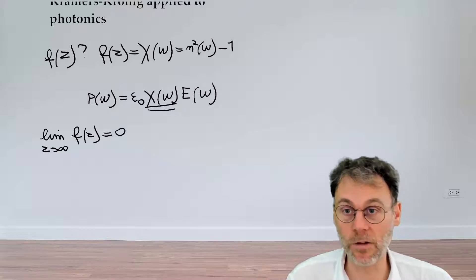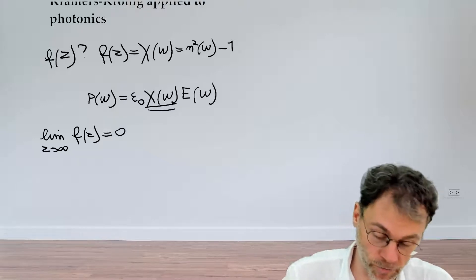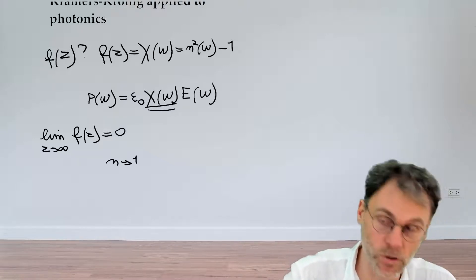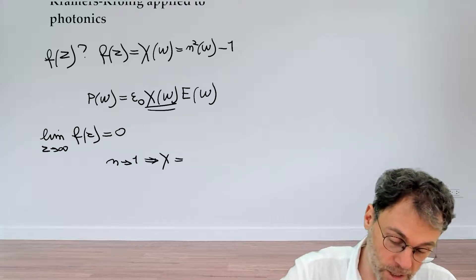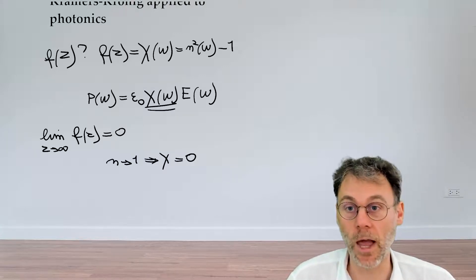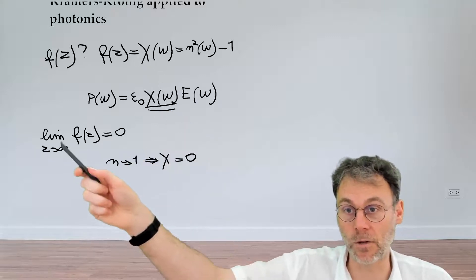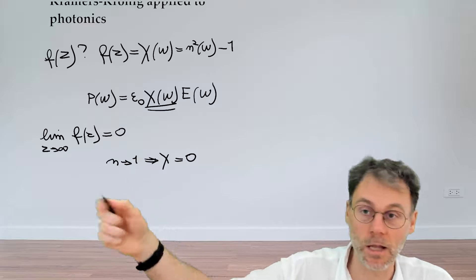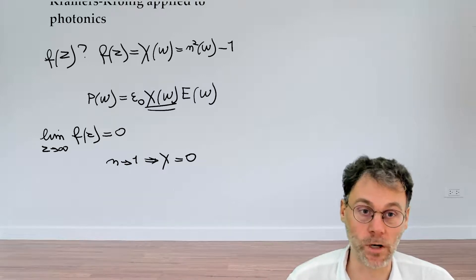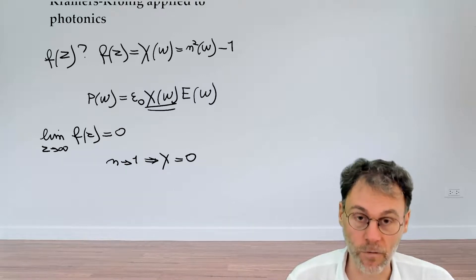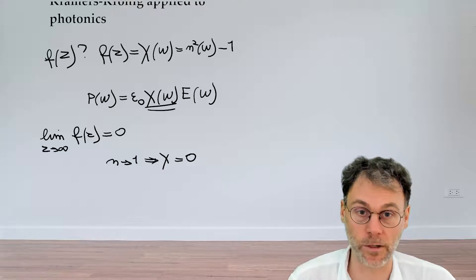So in the limits of infinitely high frequencies our refractive index approaches unity and this then means that our susceptibility approaches zero. This is why we use the susceptibility here, because that's a function that obeys this particular condition, namely that it vanishes for infinitely high frequencies, for infinitely high values of the complex variable in our case.